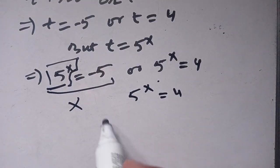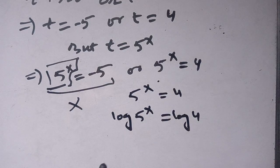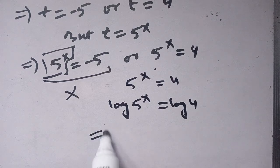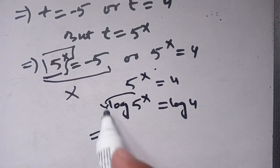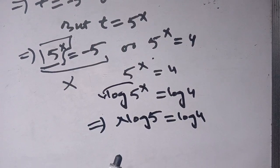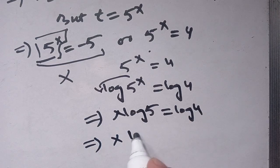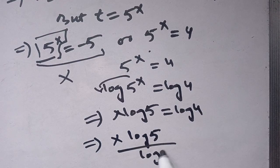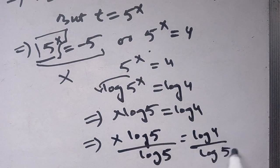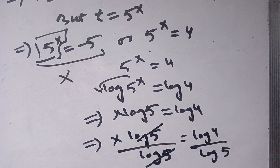Taking log on both sides, we get log of 5 power x is equal to log of 4. Using the logarithm property, x times log of 5 is equal to log of 4. Now dividing both sides by log of 5, we get x times log of 5 divided by log of 5 is equal to log of 4 divided by log of 5.